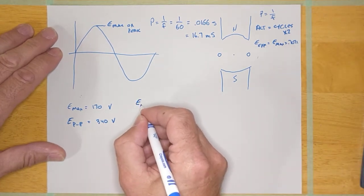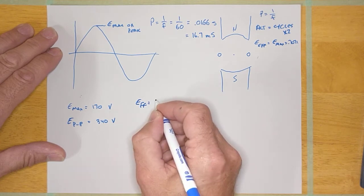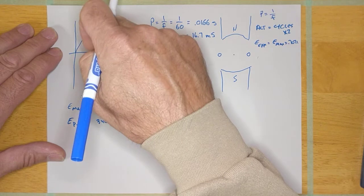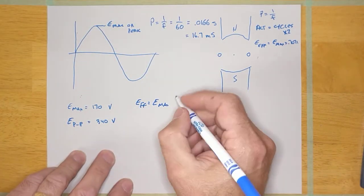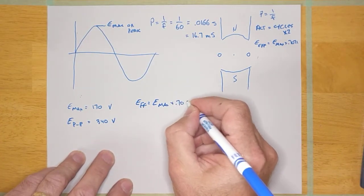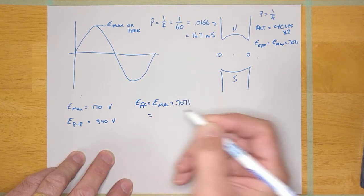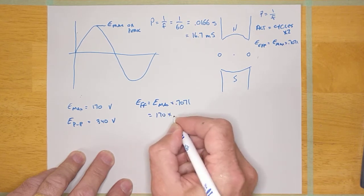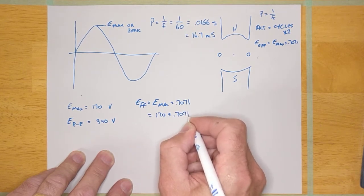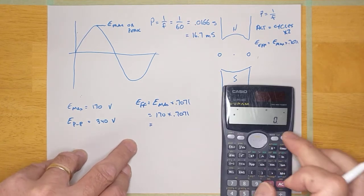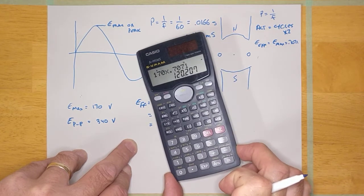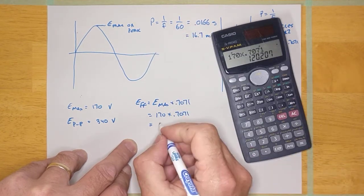The effective voltage for this sine wave is going to be the maximum voltage for this sine wave, not the peak-to-peak voltage. It's going to be the maximum voltage times 0.7071. And in this particular case, since our max voltage is 170, and I'm going to multiply that by 0.7071, it's going to be 170 times 0.7071. And so, 120 volts.